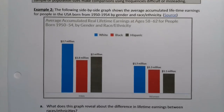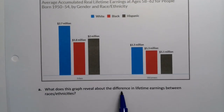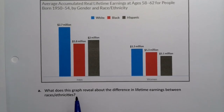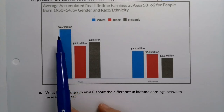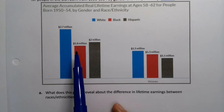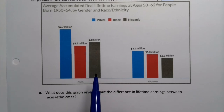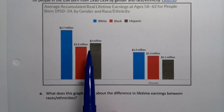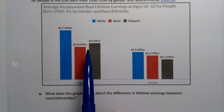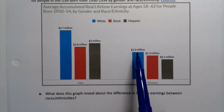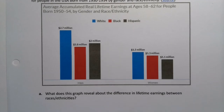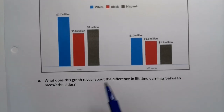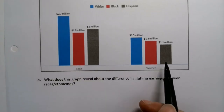One of the first things the graph asks is: what does it reveal about the difference in lifetime earnings between race and ethnicities? For men, you can see white men, black men, and Hispanic men — those are the three categories. There's a huge disparity in lifetime earnings, which is the amount of money earned over the course of a lifetime. On the other side we have white women, black women, and Hispanic women.